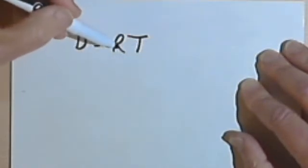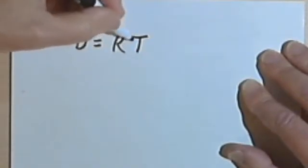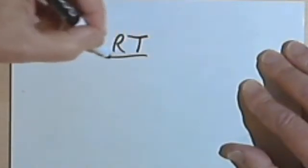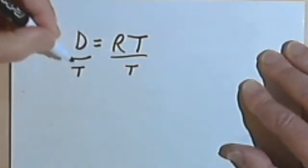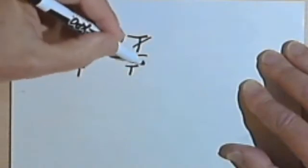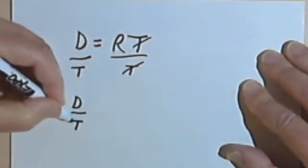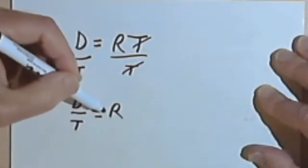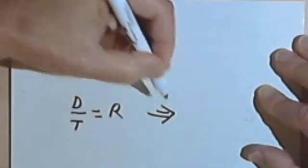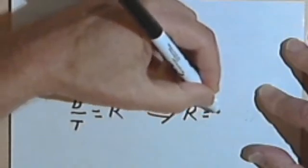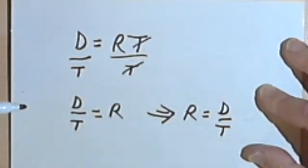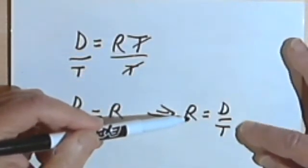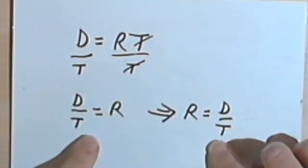What that means is we want to get the r by itself. So we've got r multiplied by t. If we want to undo that multiplication, I'll divide by t. I have to divide by t on both sides. These t's will cancel. I'm going to get d over t equals r. And if I want to put that into a different form, I can just say that's the same as r equals d over t. In other words, the letter you're solving for, the variable you're solving for, very often in your final form, is going to go on the left side of the equation. Both of these are really the same thing.